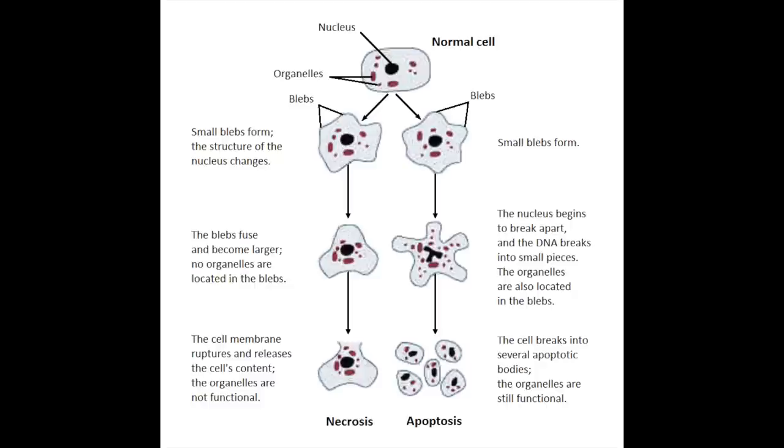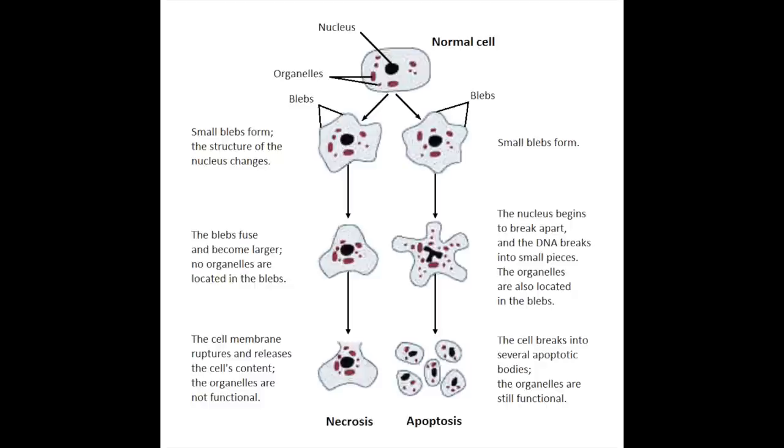Without ATP, nothing can happen. Cell processes break down, cell membranes collapse, and organelles are disrupted before each cell falls apart. This is called necrosis, and there's no way to reverse this. Not yet. Nothing can function or move — not undead, just dead.